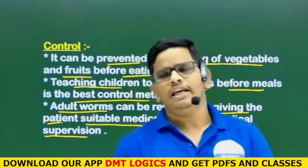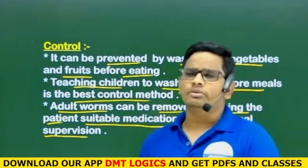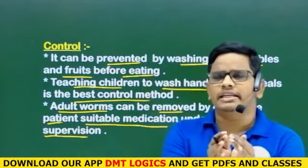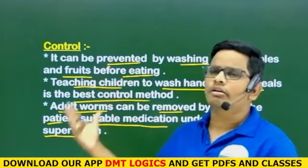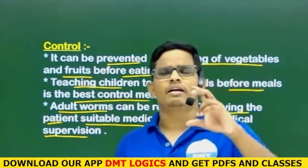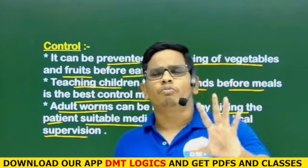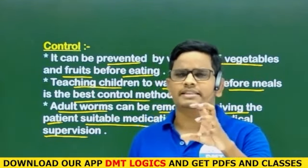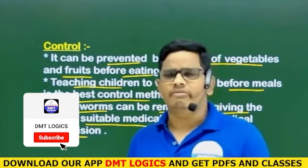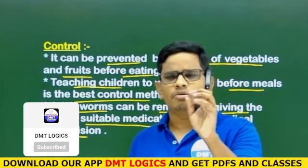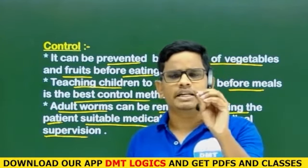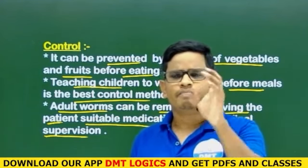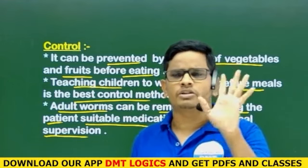To summarize: the egg stage, the primary migration, the secondary migration, and the pathogenicity are the key points. These three to four control methods are important. If you are prepared for this question, there is a good chance of scoring well.